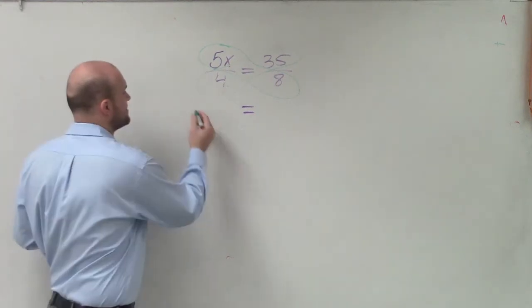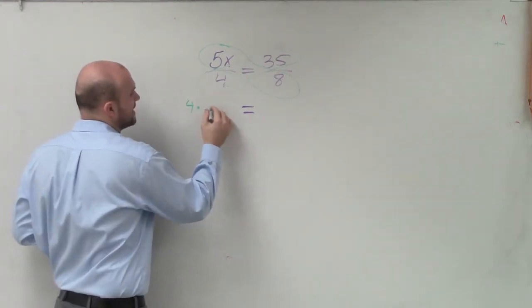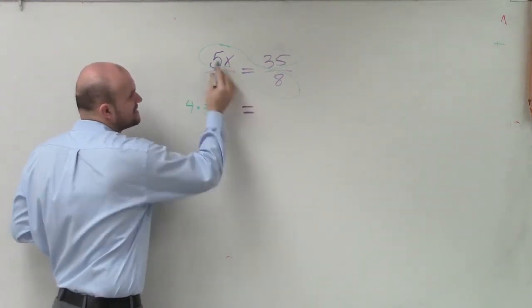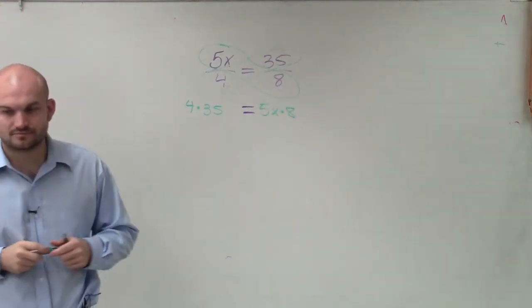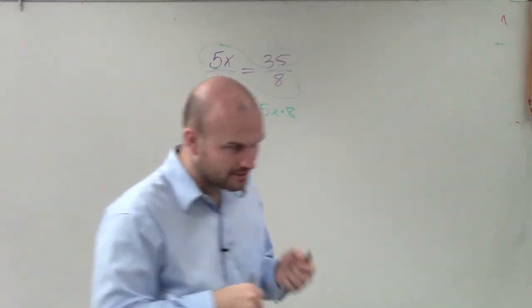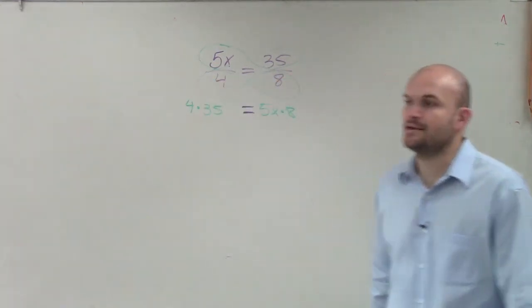So all this is pretty much saying is 4 times 35 is now equal to 5x times 8. So that's pretty much exactly what that means to go through.